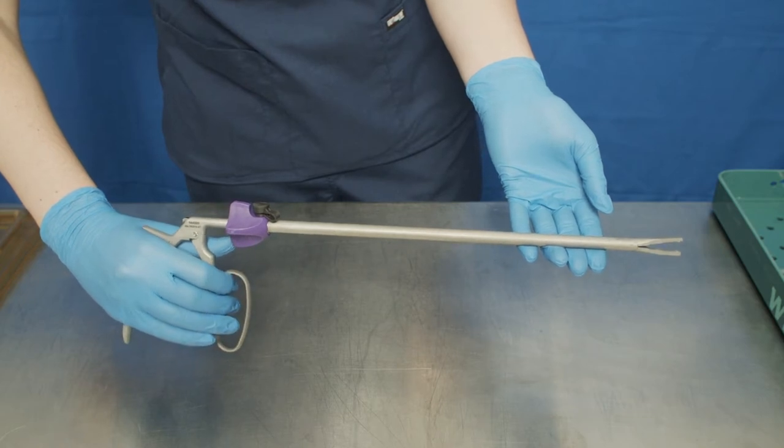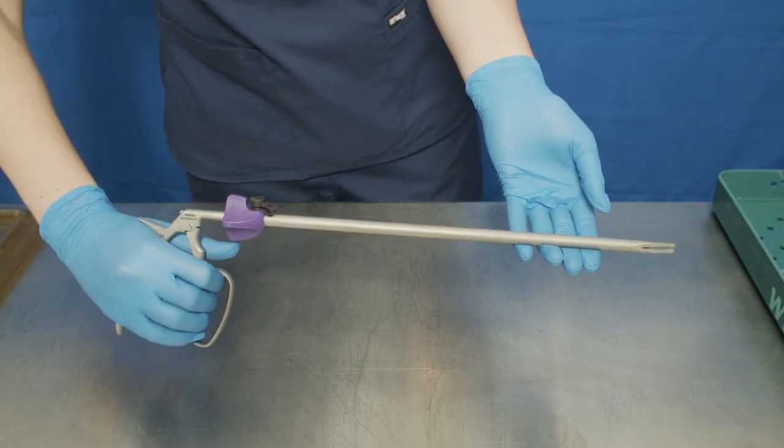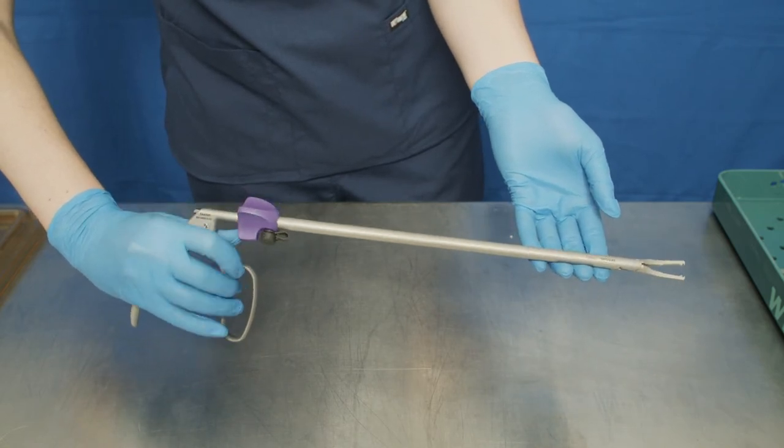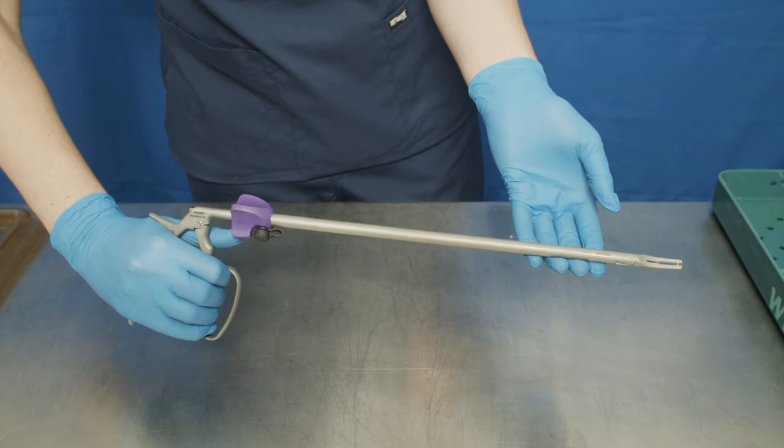First, take the applier and open and close the handle. Using your finger, rotate the applier knob. The applier knob should only be rotated with the jaws in the open position to avoid damaging the applier.